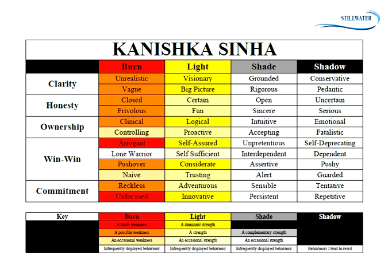The first thing you'll notice is that there are four columns: the light, the shade, the shadow, and the burn. The light column represents your strengths — your natural strengths, what people will remember you for. For example, Steve Jobs would be considered visionary, assertive, a great salesman — those are his strengths in the light column. The brighter the color, the more dominant the strength. For me, logical is a very dominant strength. Lesser dominant strengths appear in lighter yellow, like proactive, and occasional strengths are even lighter, like trusting.